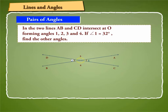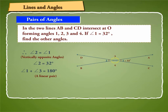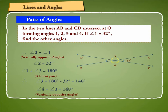Let us find the measurement of angle 2, angle 3, and angle 4 when angle 1 is equal to 32 degrees in the given figure. Since angle 1 and angle 2 are vertically opposite angles, angle 2 is equal to angle 1, which is 32 degrees. Again, angle 1 and angle 3 form a linear pair, so angle 1 plus angle 3 is equal to 180 degrees. Therefore, angle 3 is equal to 180 degrees minus 32 degrees, which is 148 degrees. Again, angle 3 and angle 4 are vertically opposite angles, so angle 4 is equal to angle 3, which is 148 degrees.